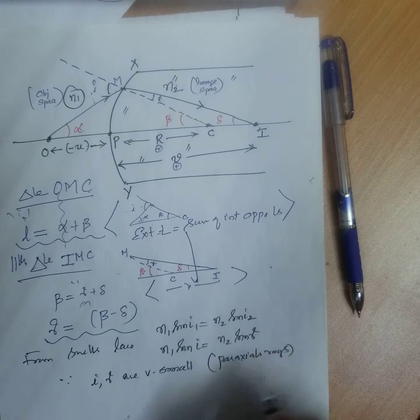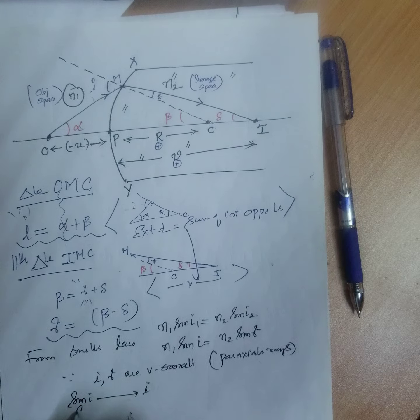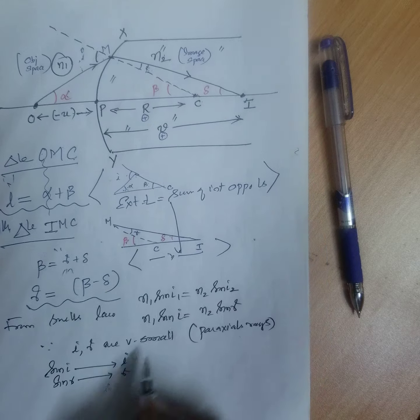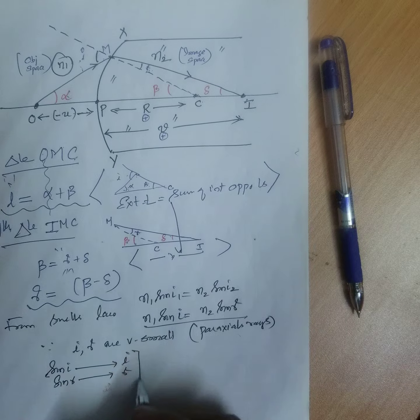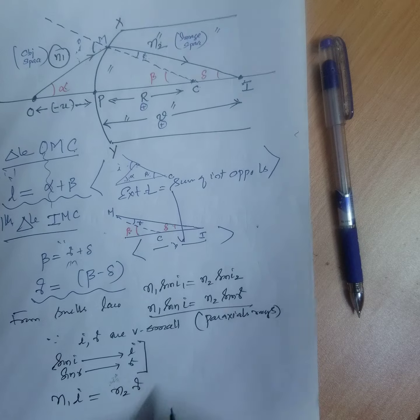For paraxial rays, sin I tends to I, sin R tends to R. Therefore, this I can write N1 I is equal to N2 R.